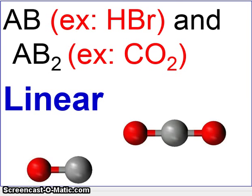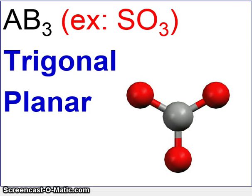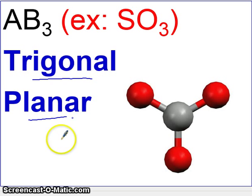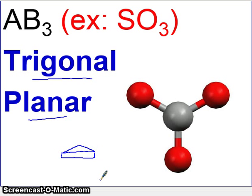The next shape is called Trigonal Planar. Trigonal means you have three atoms oriented in a triangle, and Planar means they're in the same plane — meaning one is not above and one is not below. Every corner lies in the same plane, with no above and no below. This is easier to see when shown in three dimensions, which we will do in class.